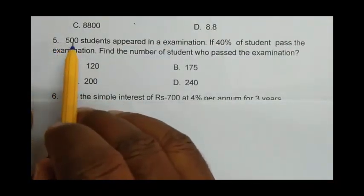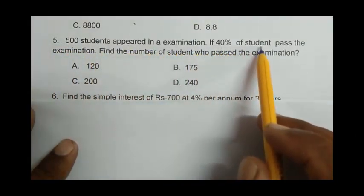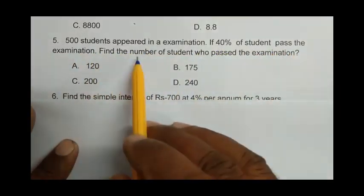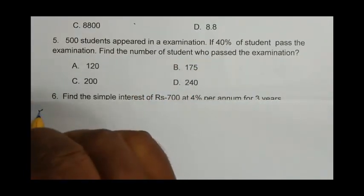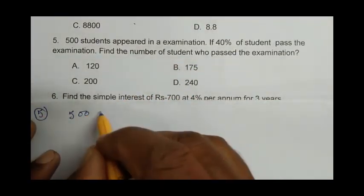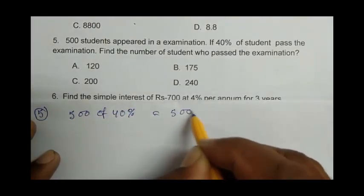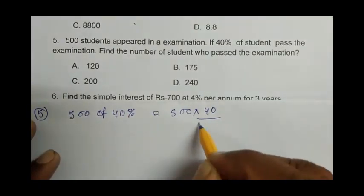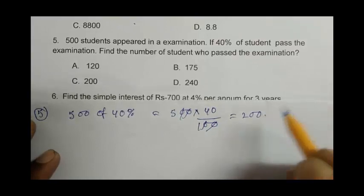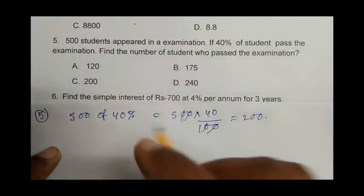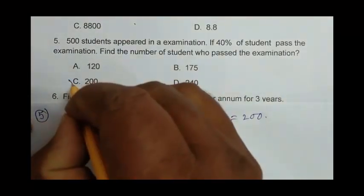Question number 5: 500 students appeared in an examination. If 40% of students pass the examination, find the number of students who passed. 40% of 500 is 200. So C is the right answer.